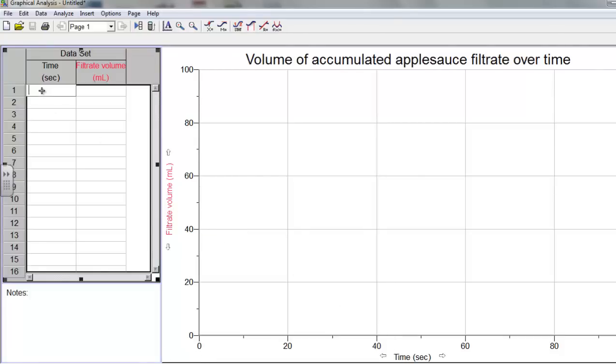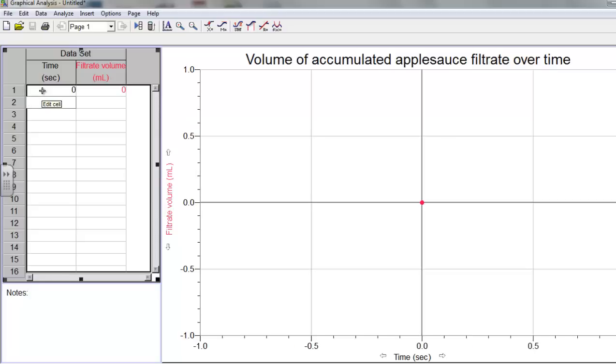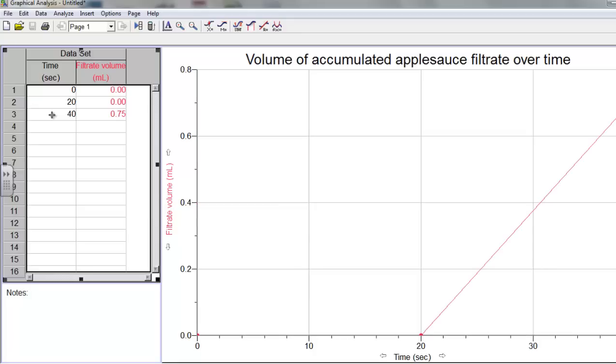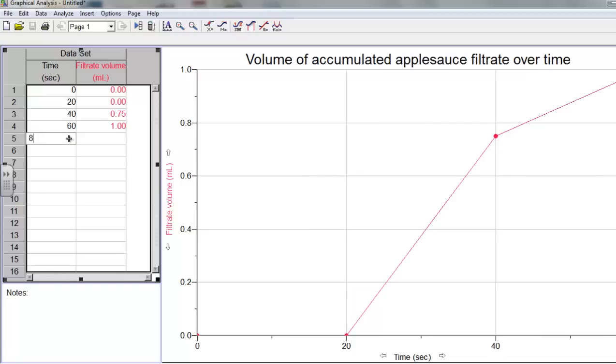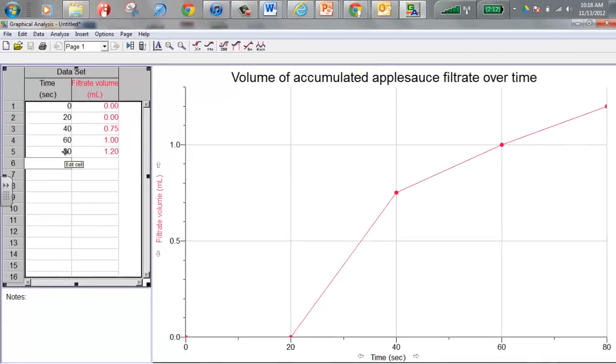What I'm going to do is just start typing in numbers that these guys have. Zero, zero - at time zero you had zero milliliters, that makes sense. After 20 seconds you still had zero milliliters. After 40 seconds you had 0.75 milliliters. After 60 seconds you had 1 milliliter. After 80 seconds we had 1.2 milliliters. And I can keep going but I'm not going to. I'll do one more here - 100 seconds, 1.5 milliliters.